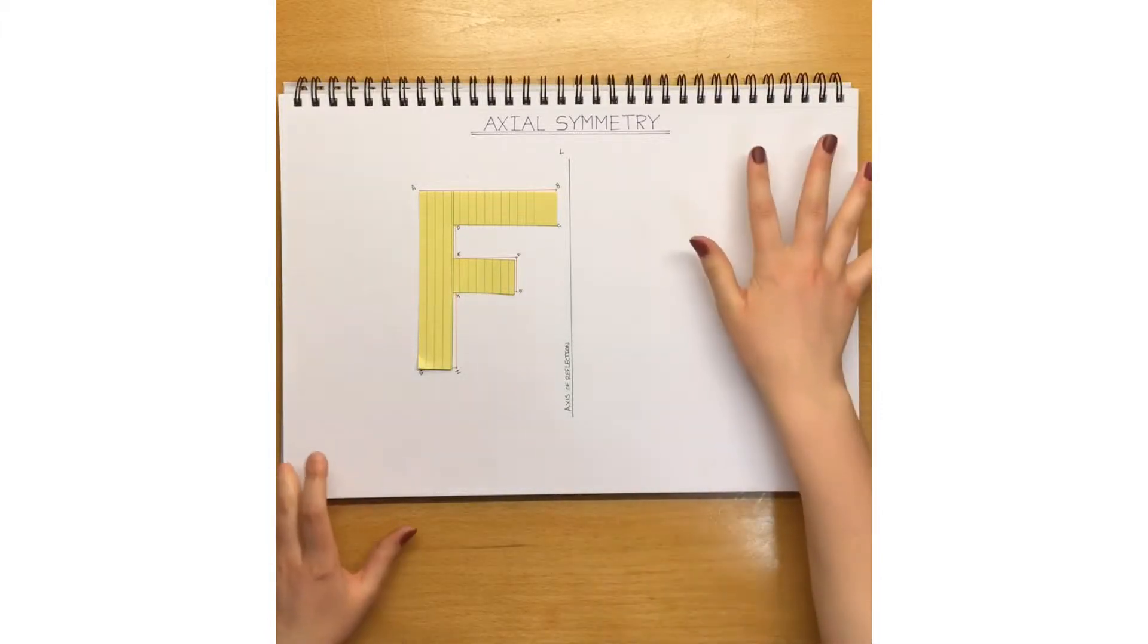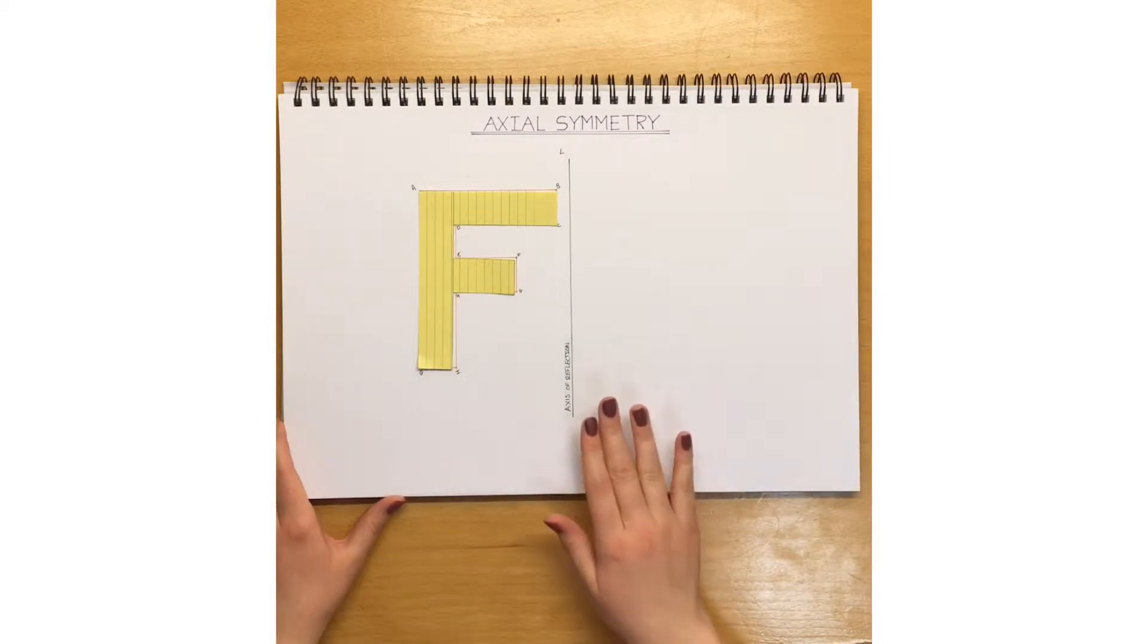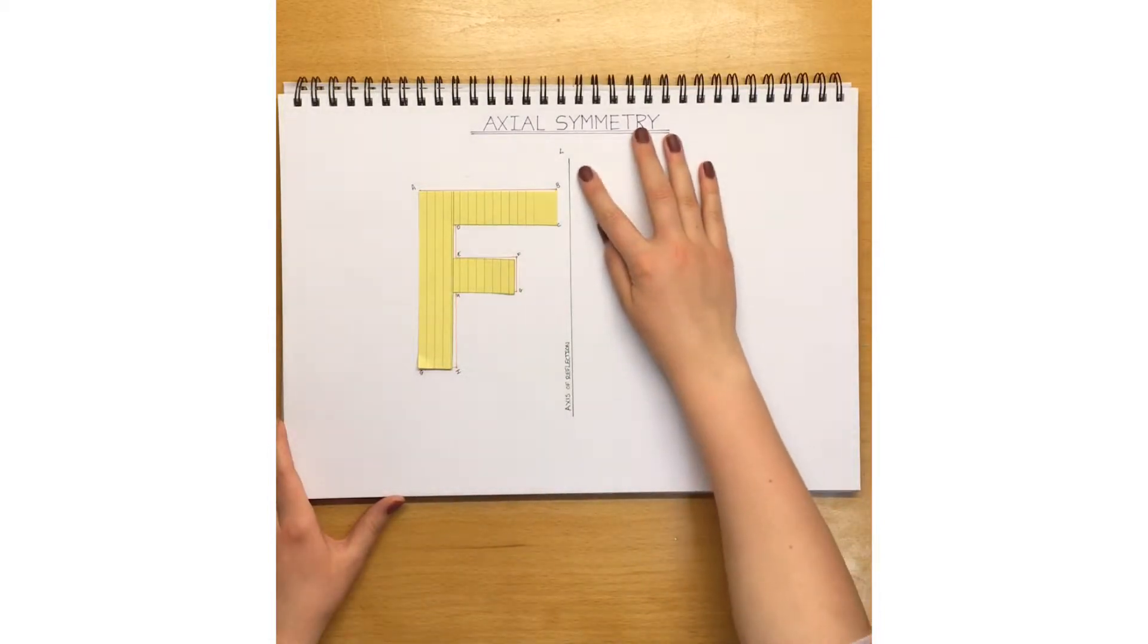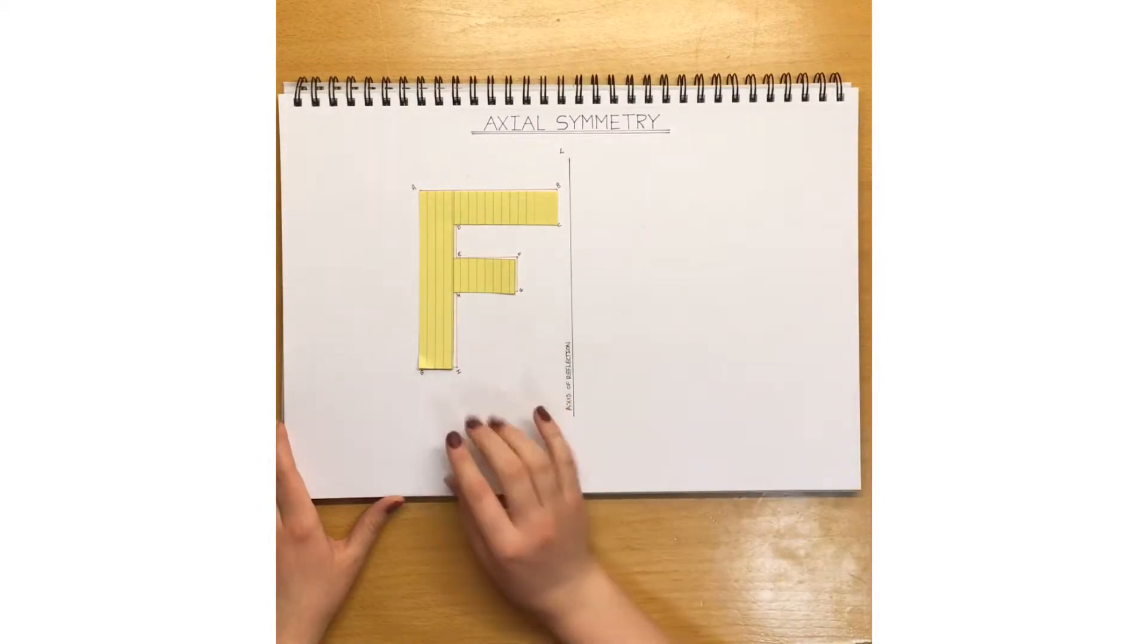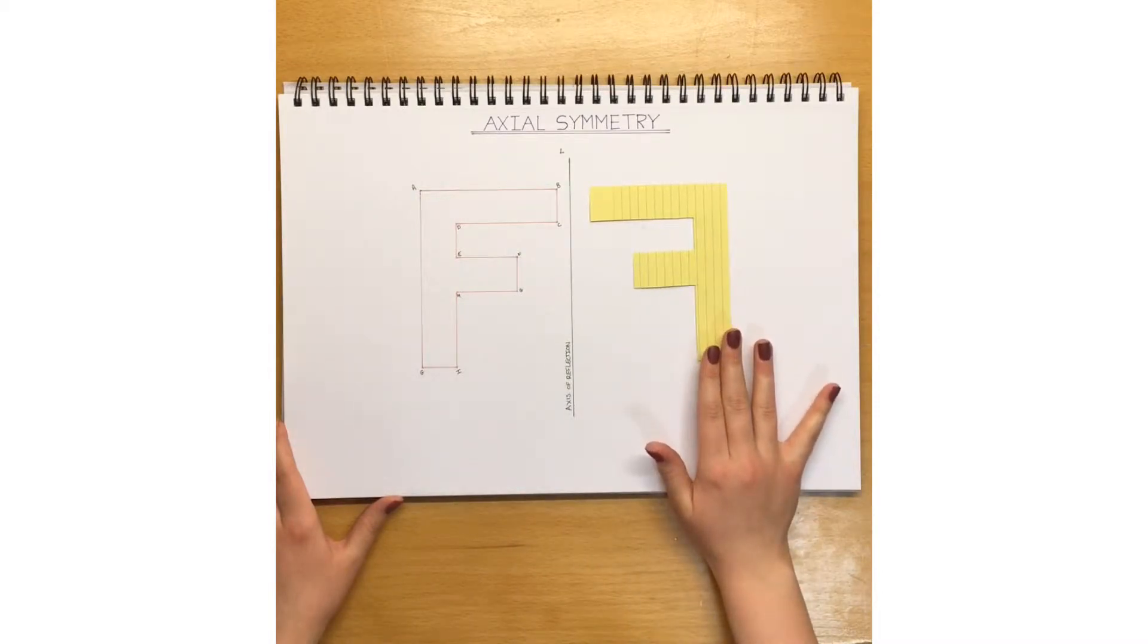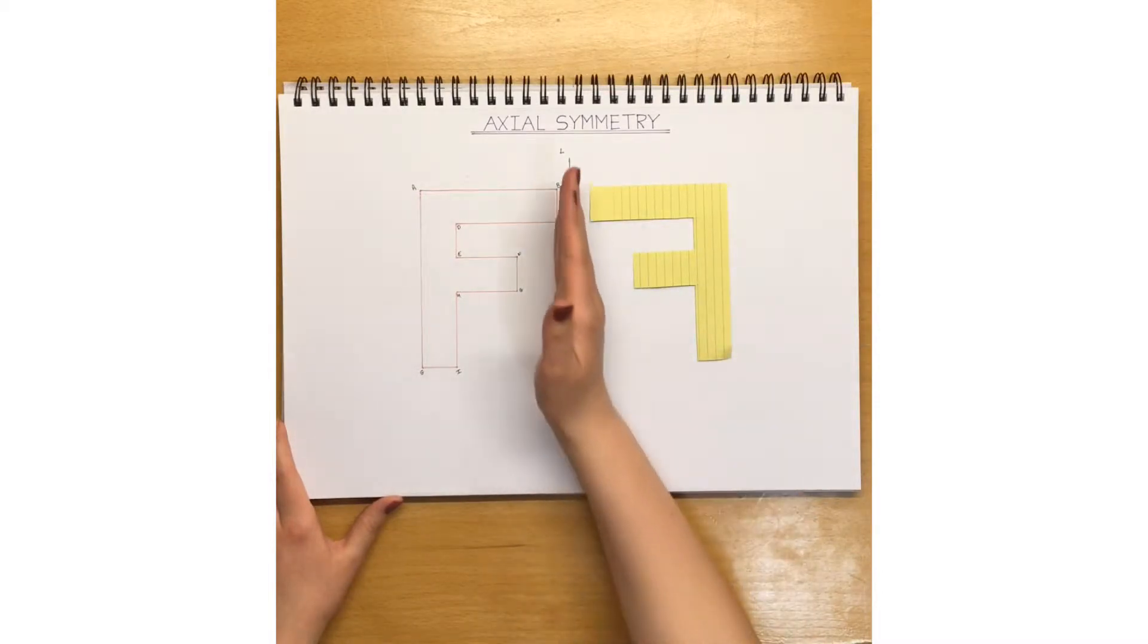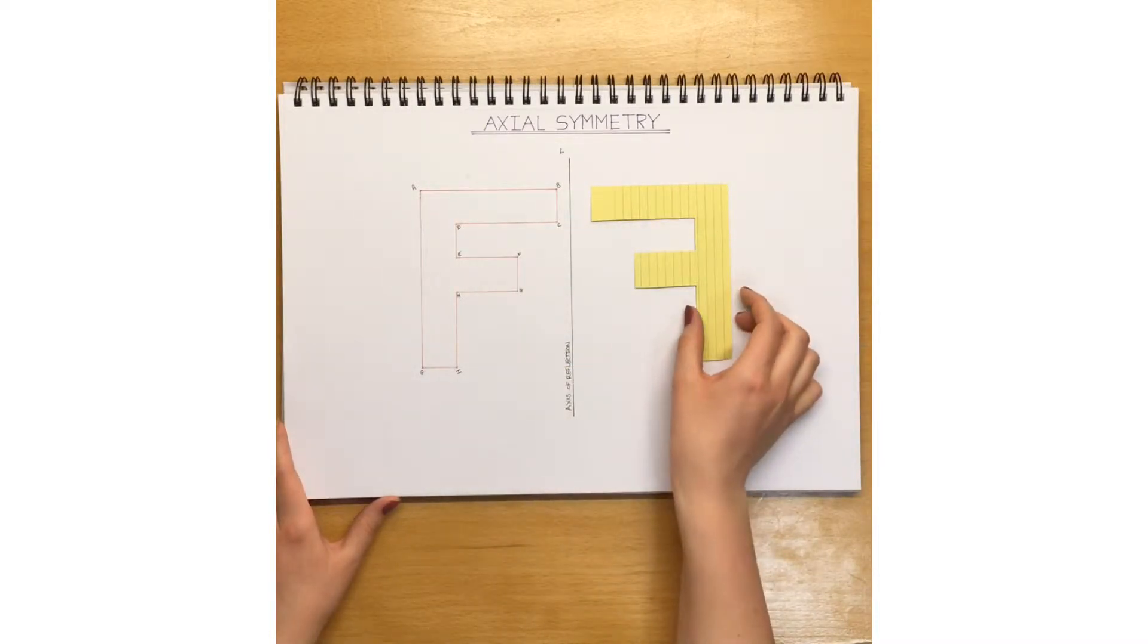So basically, axial symmetry is when a shape is flipped across the axis of reflection to a new position that is the mirror of the image. So like this. It's as if you placed a mirror in the middle and it is reflecting the image. I'm going to show you how to create this.